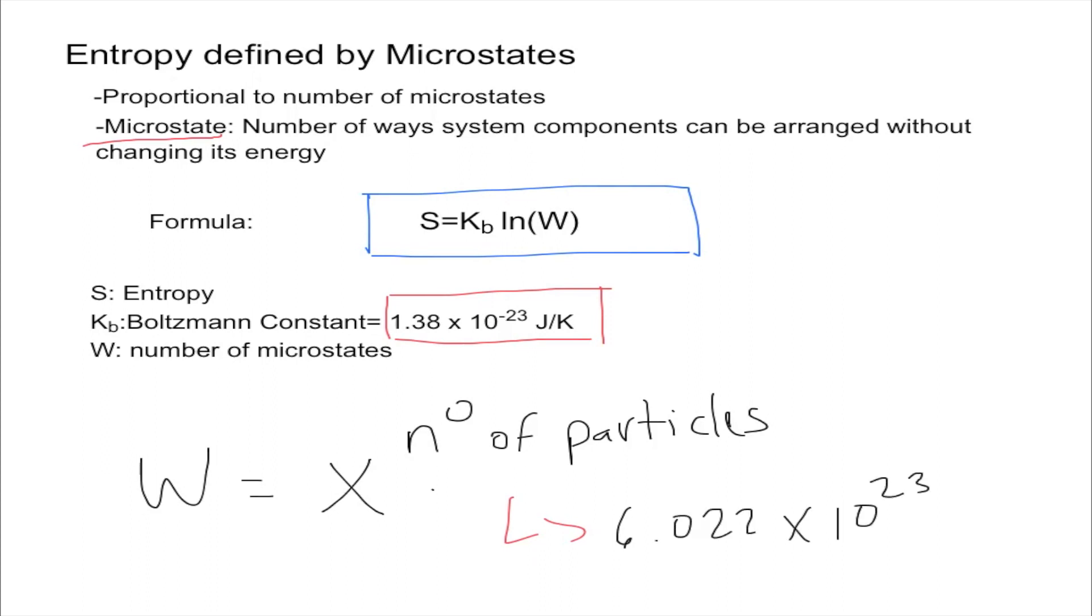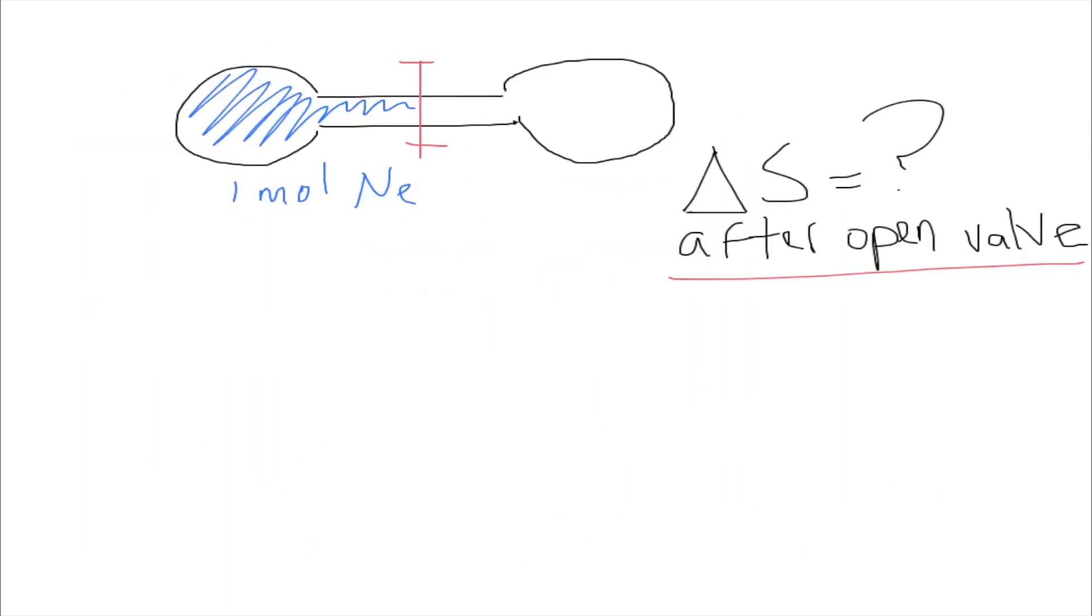And we know it's equal to 6.022 times 10 to the 23 particles. So what we're really looking for in this equation is this x, that is what's going to change.